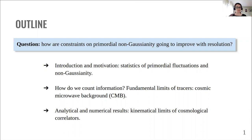First of all, I will give a brief introduction on primordial fluctuations and on what motivates us to study non-Gaussianity. Then I'll show you how we count information and how the nature of tracers affects tracers like the CMB, the cosmic microwave background. Finally, I'll discuss some results where we see that certain kinematical limits of cosmological correlators come in handy.